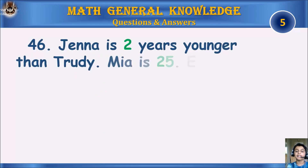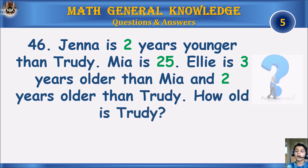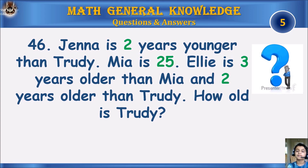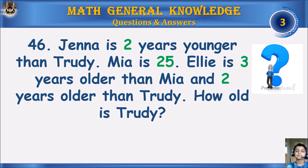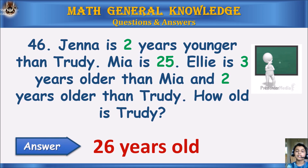Jenna is 2 years younger than Trudi. Mia is 25. Ellie is 3 years older than Mia and 2 years older than Trudi. How old is Trudi? Your time starts. Answer: 26 years old.